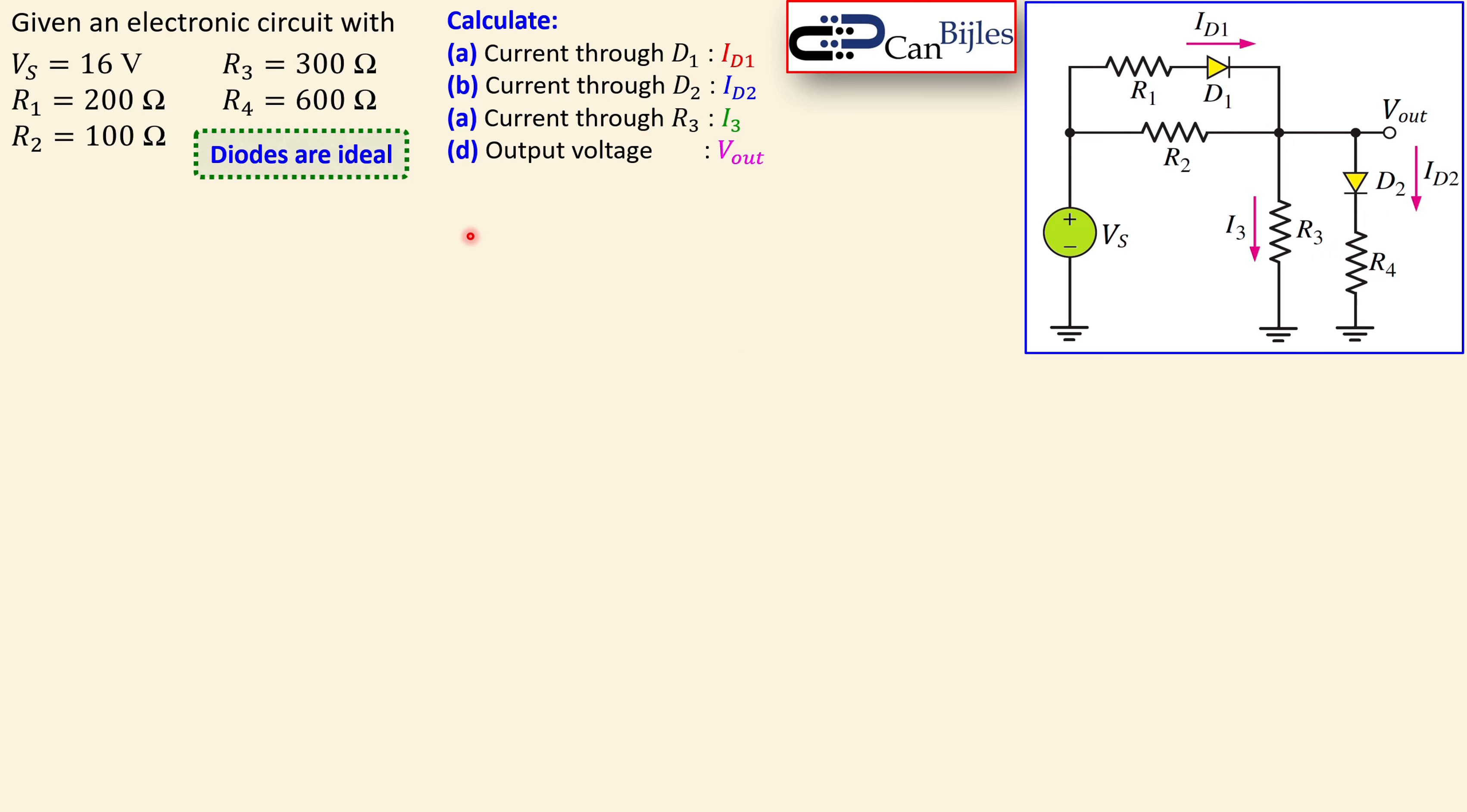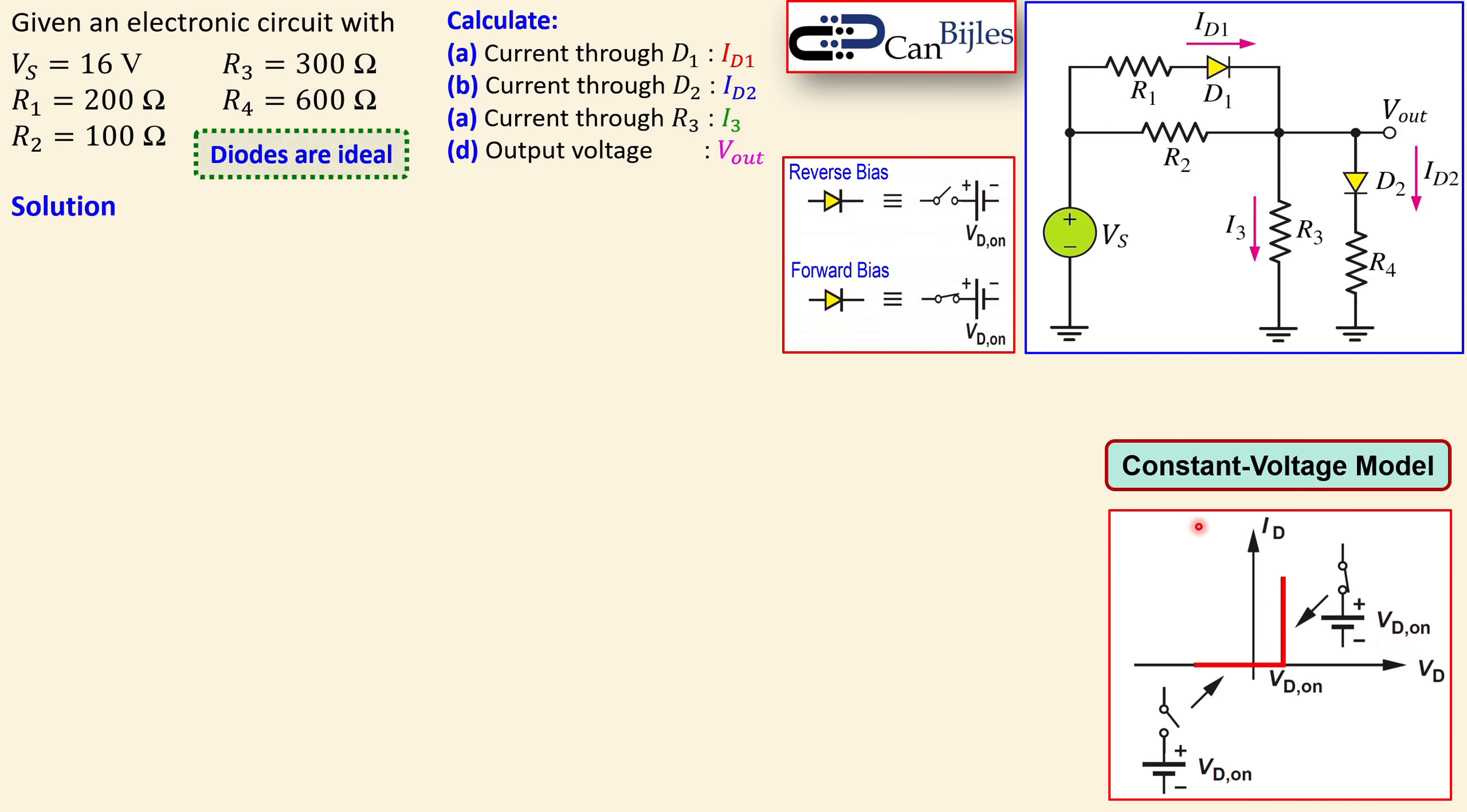The diodes are assumed to be ideal but we will use the constant voltage model. So the voltage model means the following: up to VD,on there is no current flow, so there will be zero volts. From VD,on and larger, the diode will be modeled by a battery which is just VD,on. That value is then 0.7 volts.